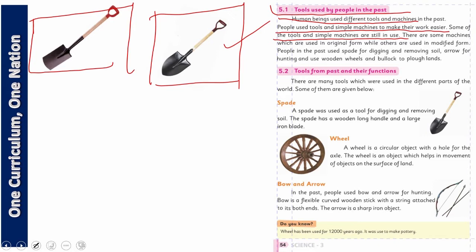We will also see those which are still used today. There are some machines which are used in original form while others are used in modified form. People in the past use spade for digging and removing soils, arrow for hunting, and using wooden wheels and bullock to plow lands.